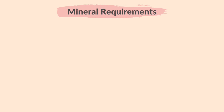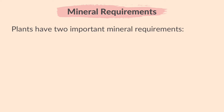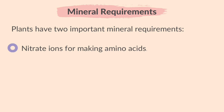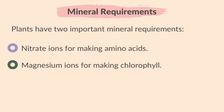Although plants make their own carbohydrates, they also need certain minerals to photosynthesize and grow. Plants have two important mineral requirements: nitrate ions for making amino acids, and magnesium ions for making chlorophyll.